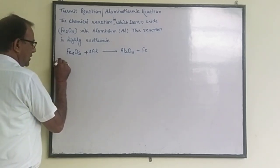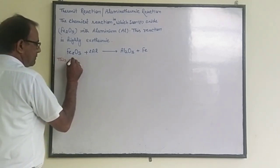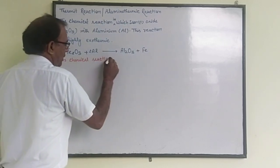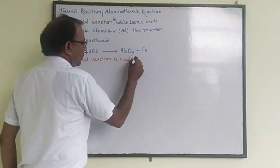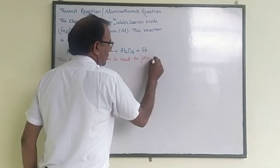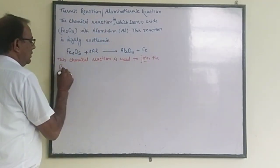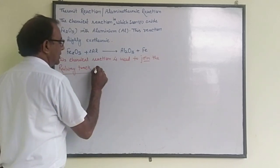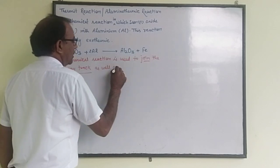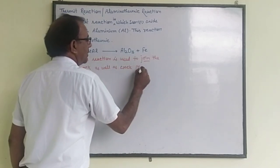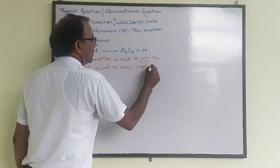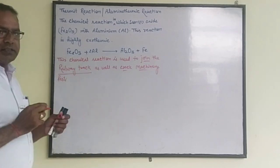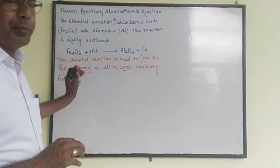This molten mixture of metals is used to join railway tracks as well as cracked machinery parts. This chemical reaction is used to join the railway track as well as repair cracked machinery parts. This is the thermite reaction, also known as the aluminothermic reaction.